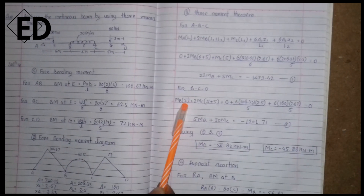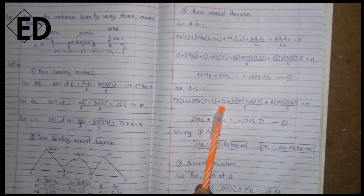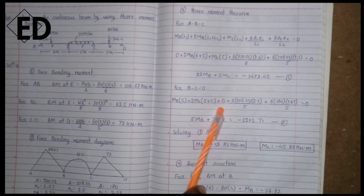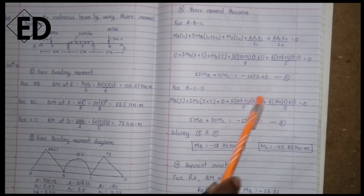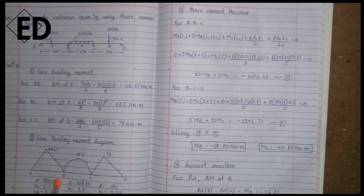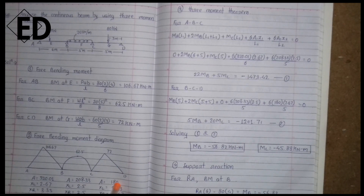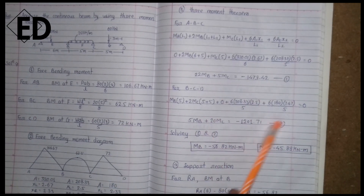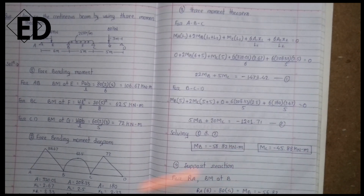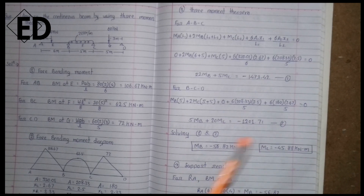Now moving to span BCD: the bending moment at D — D is a roller, so M_D = 0. The equation becomes: M_B·L1 + 2·M_C·(L1 + L2) + 0 = −6A1·x1/L1 − 6A2·x2/L2, where A1 and A2 are taken for spans BC and CD. Solving, we get: 5·M_B + 20·M_C = −1201.71. This is equation number two.